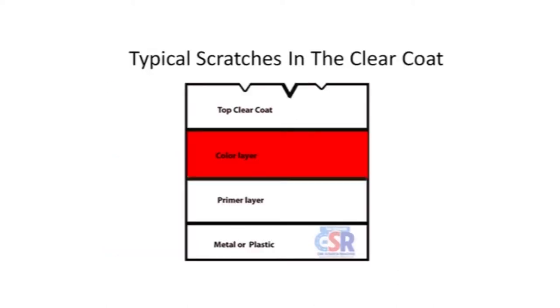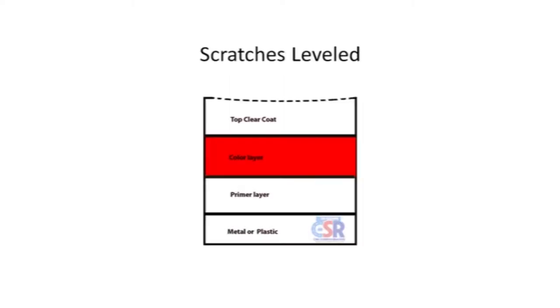Clear coat scratches have not penetrated to the color base layer, primer, or metal or plastic. Now the reason why they look white is because think about a diamond. A diamond has facets and reflects light. When you scratch the clear coat on the surface of your car, it's clear, you're creating a facet essentially, and it's reflecting light. That's why clear coat scratches look so terrible on dark colored cars.